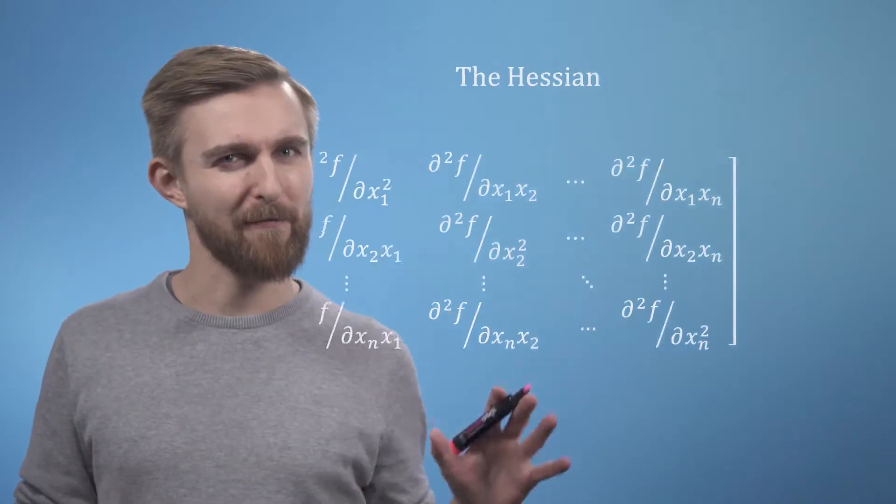For the Jacobian, we collected together all of the first order derivatives of a function into a vector. Now, we're going to collect all of the second order derivatives together into a matrix, which for a function of n variables would look like this.